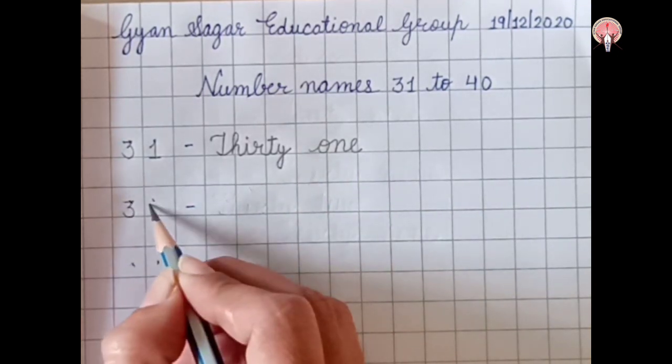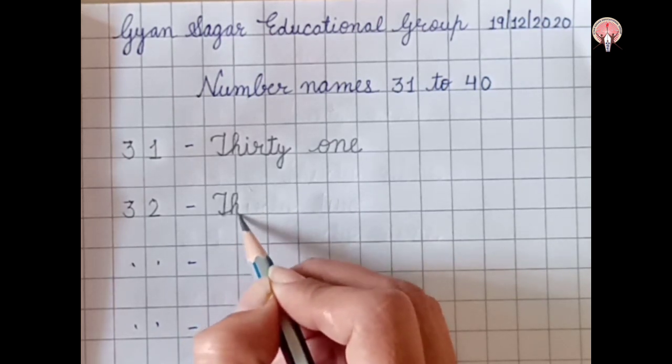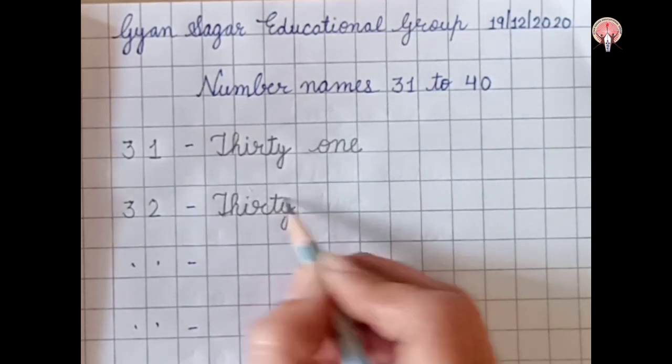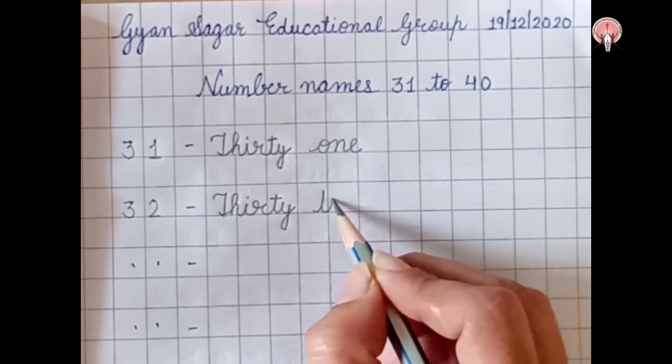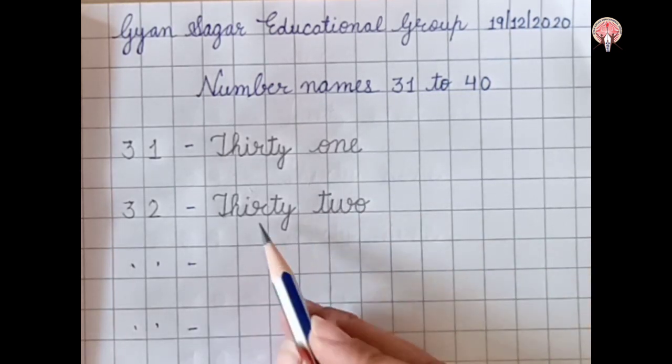3, 2. Thirty, T-H-I-R-T-Y, 30. Two, T-W-O, 2. 32.